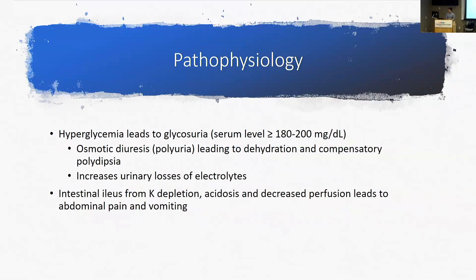The hyperglycemia leads to glycosuria. Around glucose levels of 180 to 200, the kidneys stop being able to process the excess glucose and you start to spill glucose into the urine. This creates an osmotic diuresis — the higher the concentration of glucose in the urine, the more water it pulls along with it, causing dehydration and the compensatory polydipsia, which is one of the most common presenting signs.